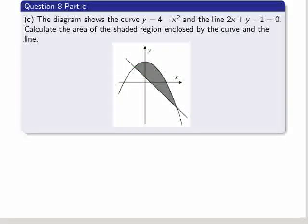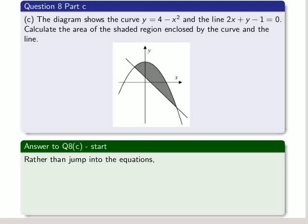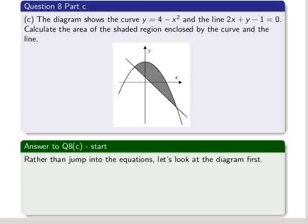So we can move to part c now. We're given a diagram, it shows the curve y equals 4 minus x squared and the line 2x plus y minus 1. And we have to calculate the area of the shaded region. Rather than jump into the equations, let's look at the diagram first.